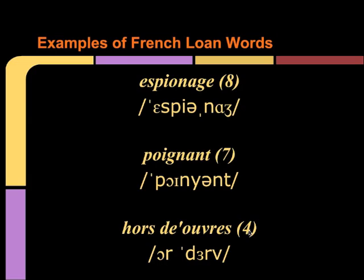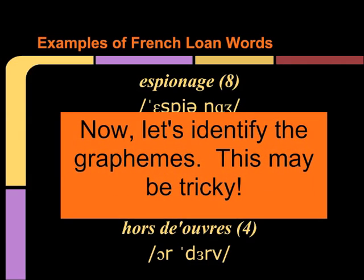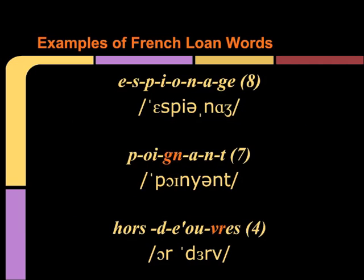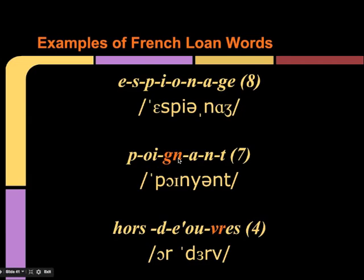First we're going to count the number of phonemes based on the IPA spelling. Espionage has eight sounds, poignant has seven, but notice the last word — this very long word has only four sounds. This is going to be tricky when we're trying to determine the graphemic representation. In our first example, the sounds and letters matched fairly closely except for the sound at the end — each individual letter connects to an actual IPA sound. But in the second two words, English actually did something different.